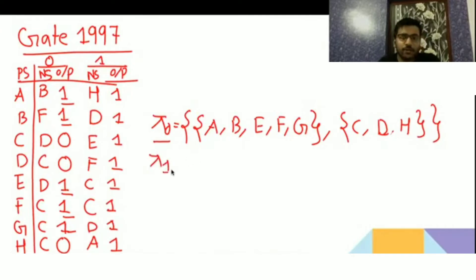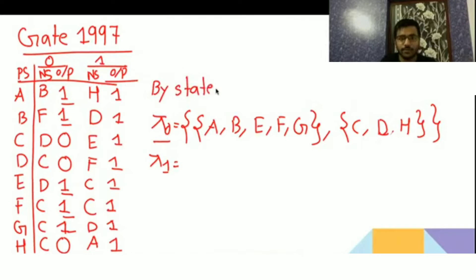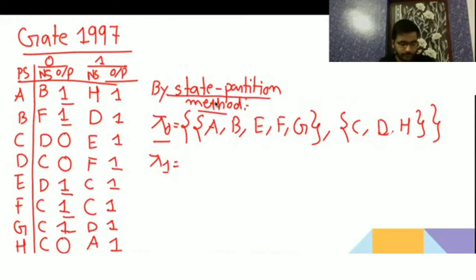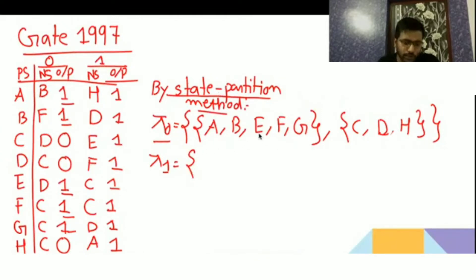There is no doubt in pi-0. Pi-0 is different here; everything else remains the same. This method is called the state partition method. Now let's see what pi-1 is. In pi-1 we need to check where each state's transitions go — if they go into one partition, the states stay together; if they go into different partitions, they must be separated.